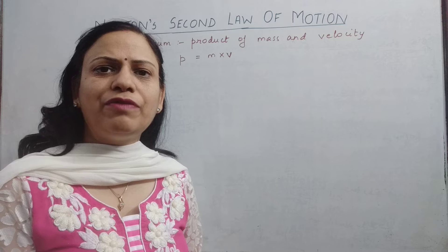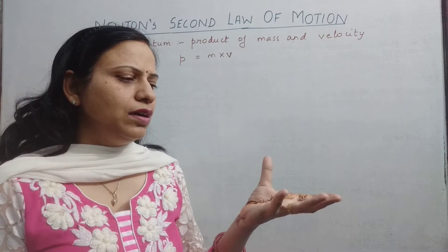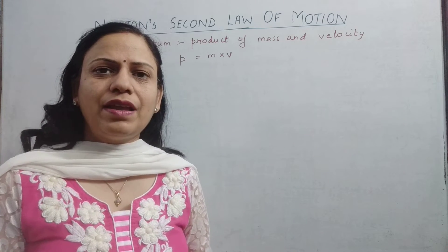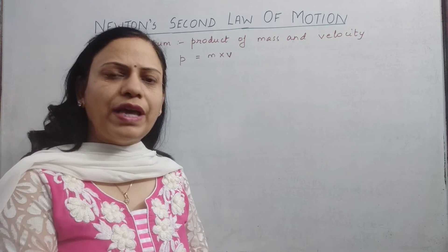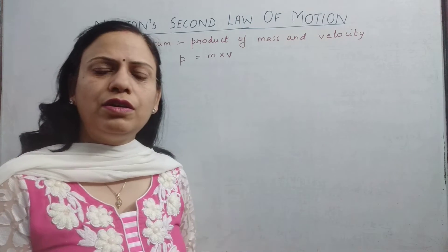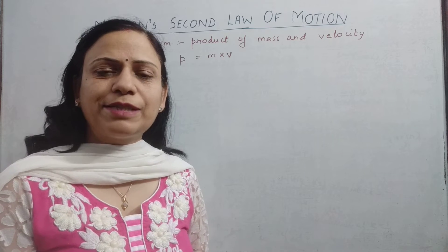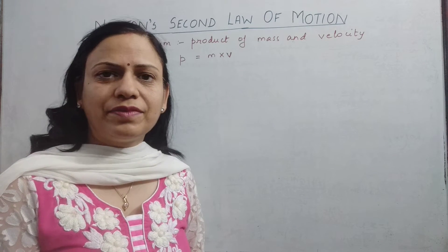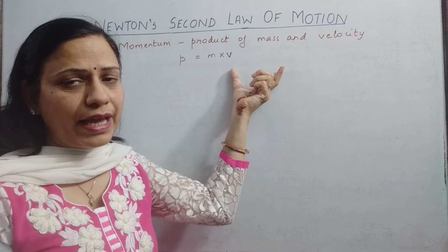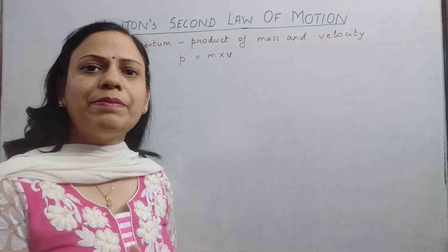Another common example: suppose we have two bricks of equal size. We drop one from just above the ground and the other from the roof of a building. The brick falling from greater height will cause more damage because it falls from a greater height, its acceleration is more and its velocity is more. So if the mass is the same and velocity is more, the object has greater momentum. Again, momentum is a measure of force.